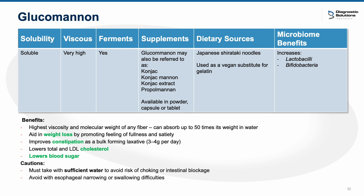Glucomannan is a soluble, bulk-forming fiber derived from the konjac root from Eastern Asia, used for thousands of years as both food and traditional medicine. One of its standout properties is its extremely high viscosity — it has the highest viscosity and molecular weight of any fiber and can absorb up to 50 times its weight. This helps support conditions such as constipation, high cholesterol, blood sugar, and weight loss. Caution should be used with water: because it is so viscous, insufficient water intake can increase risk of choking and blockage. Must avoid in conditions such as esophageal narrowing and swallowing difficulties. Dietary sources include Japanese shirataki noodles, and it can be used as a vegan substitute for gelatin. Microbiome benefits include improvements in Lactobacillus and Bifidobacterium.